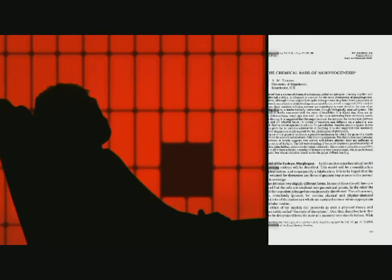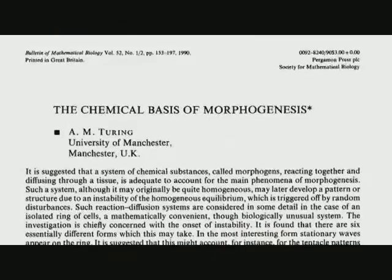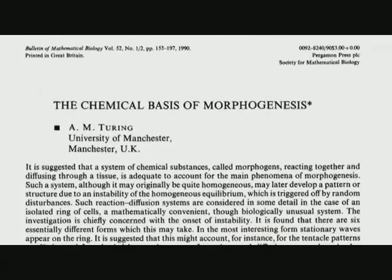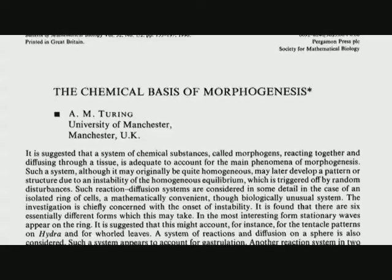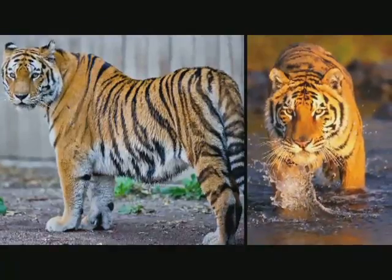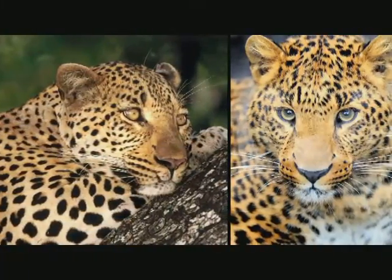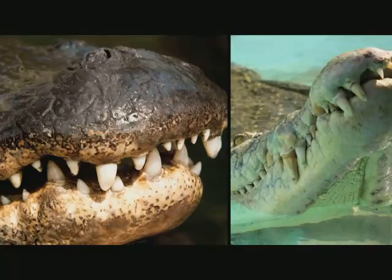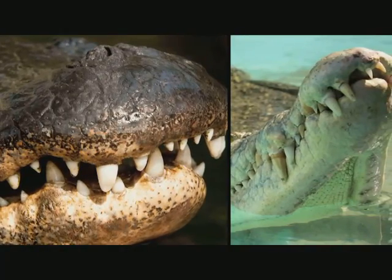Amid all this personal drama, he still found the time to publish a visionary paper titled 'The Chemical Basis of Morphogenesis' — on the mathematics of regularly repeating patterns in nature, like the stripes on tigers and zebrafish, the spots on leopards, and the spacing in rows of alligator teeth.